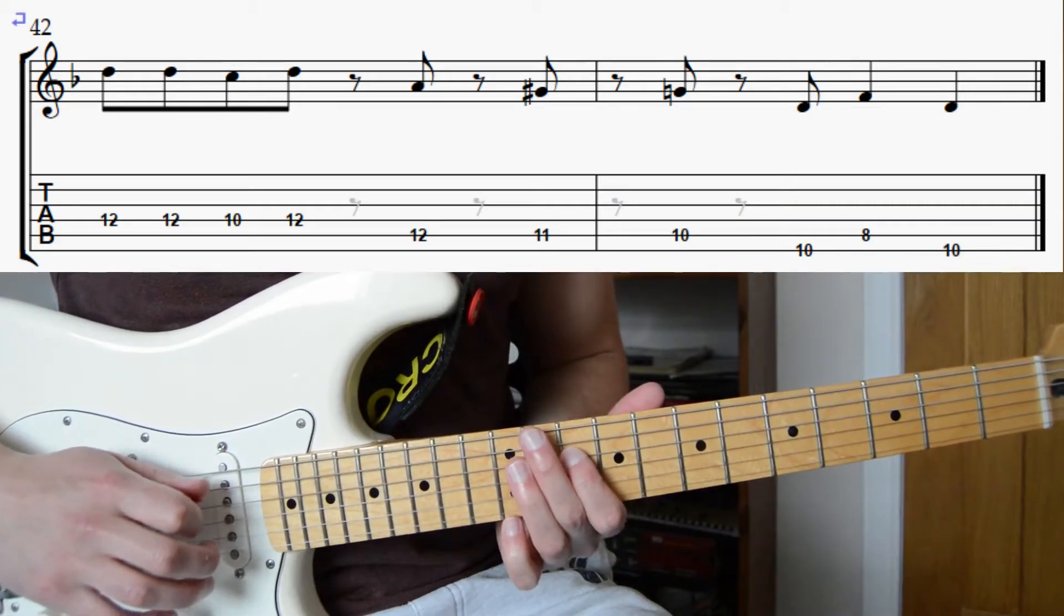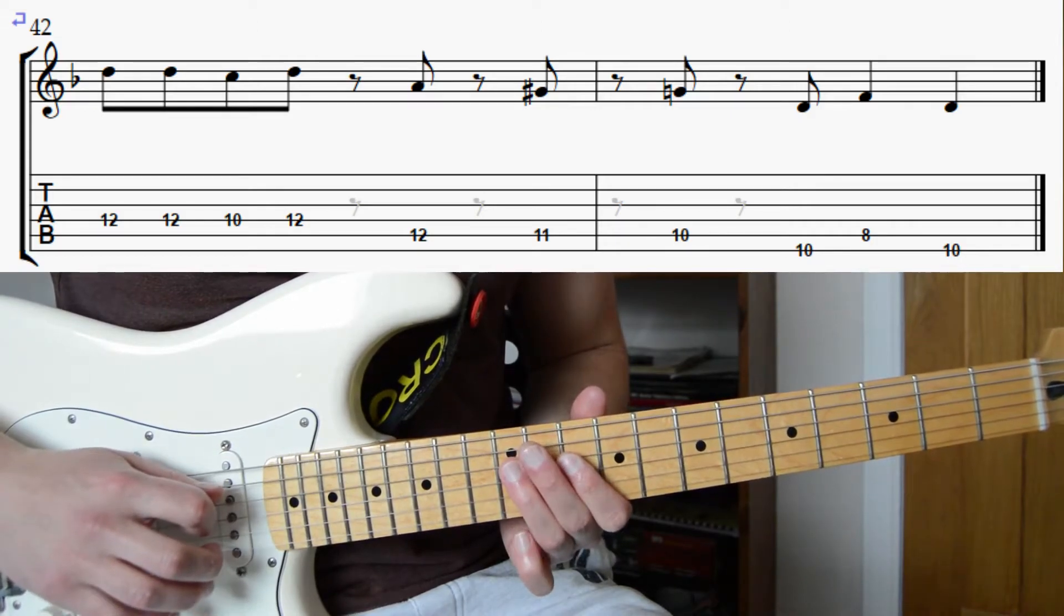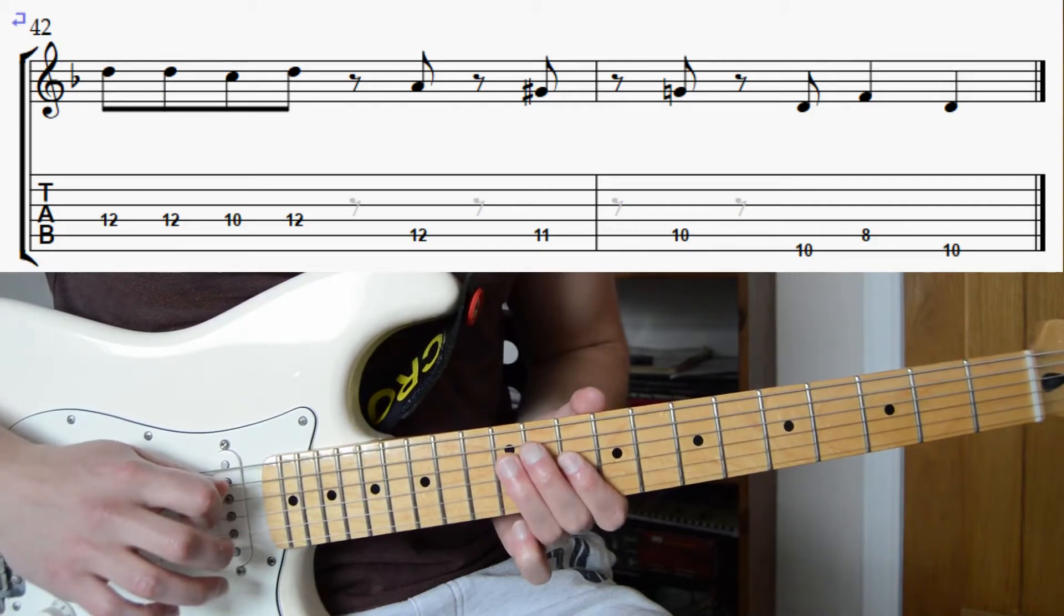Then we're going to play the 10th fret on the D string with our first finger and then the 12th fret again. So that's 12, 12, 10, 12.